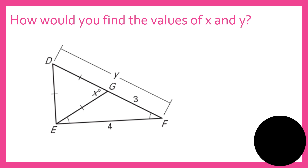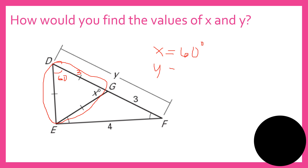Now, how would you find the values of x and y? This is an isosceles triangle. The angle shown is 60 degrees, so x equals 60 degrees. This other part is an equilateral triangle, so if one side is 3, this side is also 3. X is 60 degrees, and y equals 3 plus 3, which equals 6. Or we can note the longest side is 4.